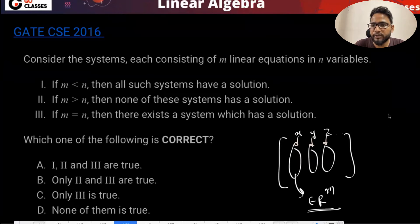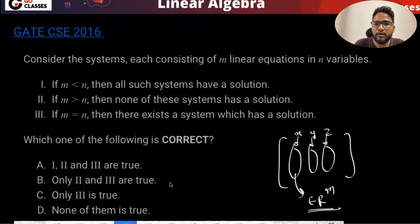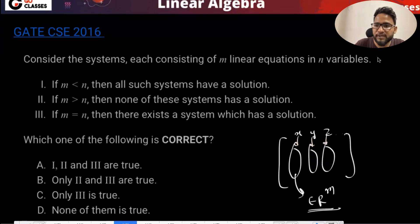Arpan is getting option B, Arnav is getting option B, Mahavid C, Abhishek C, Serenya C. Mostly you are getting C. Let me just check if C is the correct answer or not.